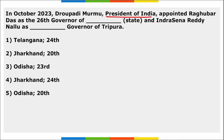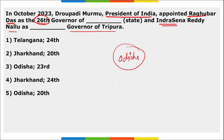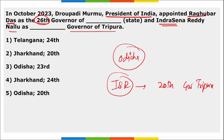President Draupadi Murmu appointed Raghubar Das as the 26th Governor of Odisha and Indra Sain Reddy Nalu as the 20th Governor of Tripura — right option is option five.